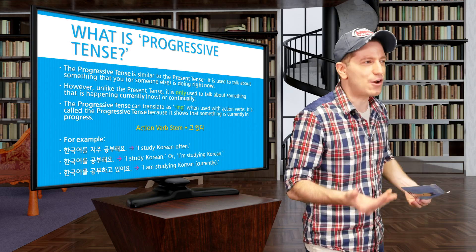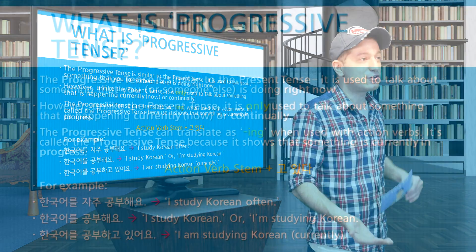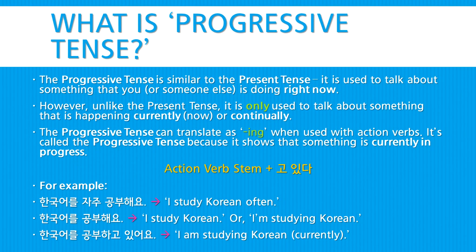Here's basically how to use it with some examples, and in the next slide we'll cover how to actually conjugate it. Here's a quick outline of the form: you take an action verb stem with 고 있다 and conjugate 있다. For example, 한국어를 자주 공부해요 means 'I study Korean often.' Or 한국어를 공부해요, which can mean 'I study Korean' or 'I am studying Korean.' And finally, 한국어를 공부하고 있어요 means 'I am studying Korean currently or continually.'